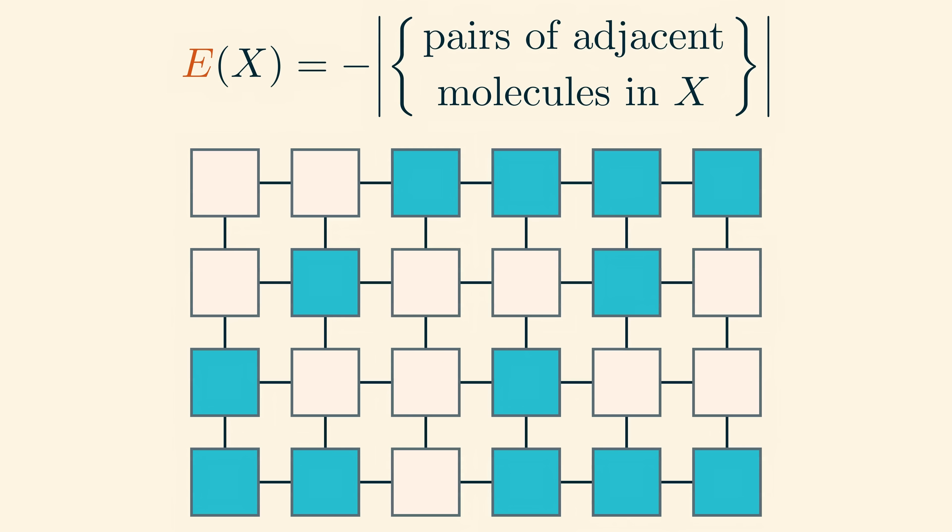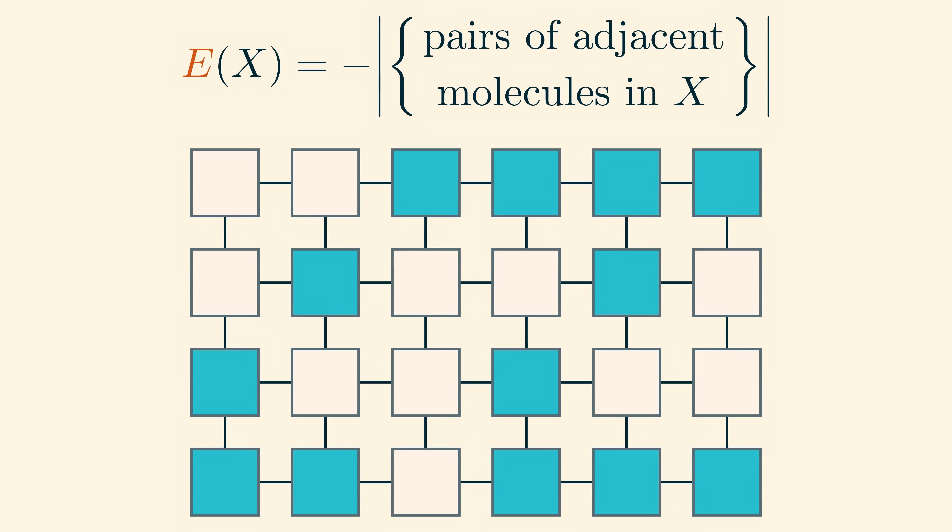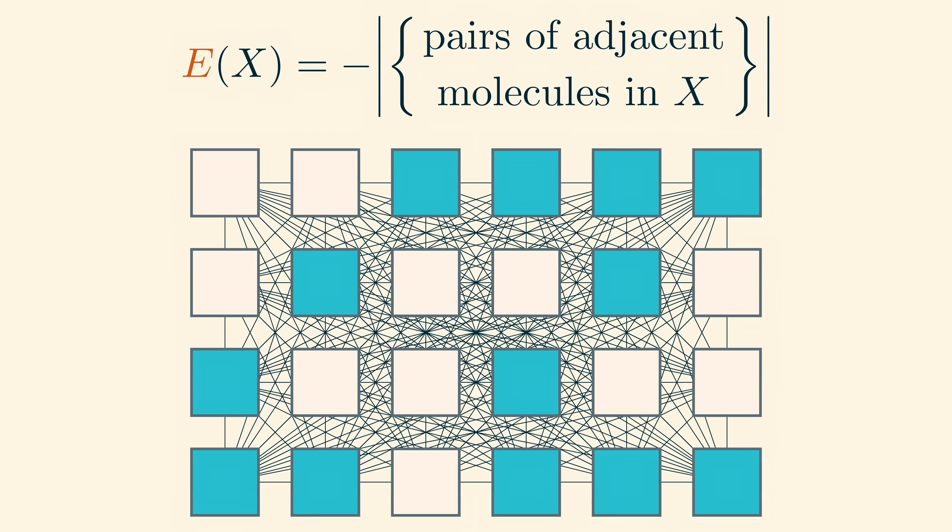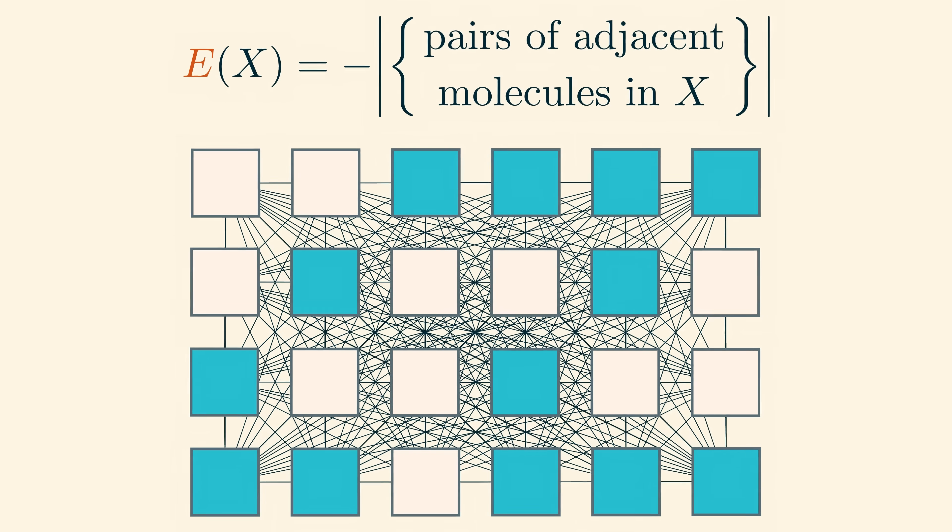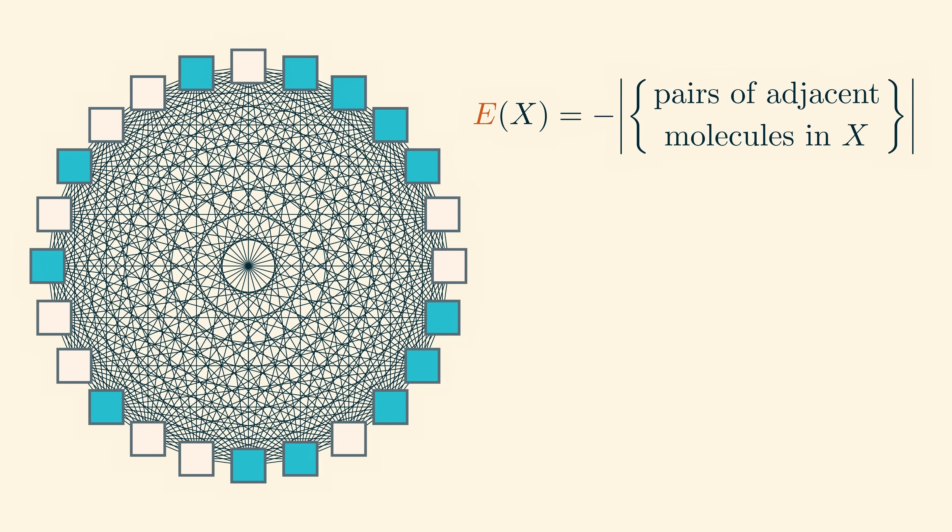In order to forget about the geometry, one simple thing we could do is just suppose that every pixel is next to every other pixel, meaning that the relationship of being next to looks something like this. The energy is still the number of pairs of molecules that are next to each other, but now this means something different, since all molecules that are present are interacting with each other simultaneously.